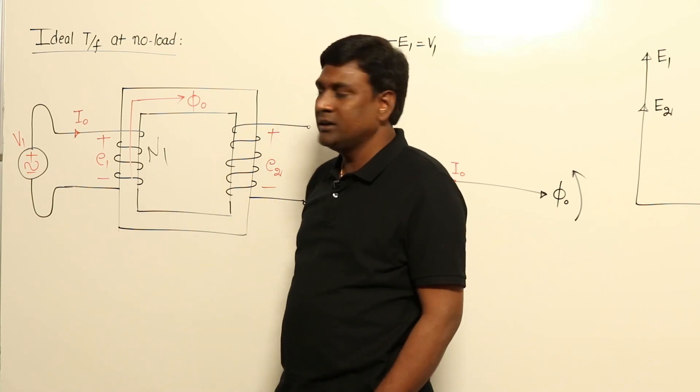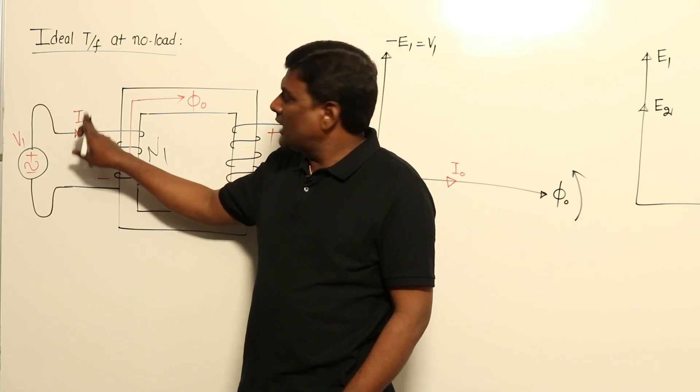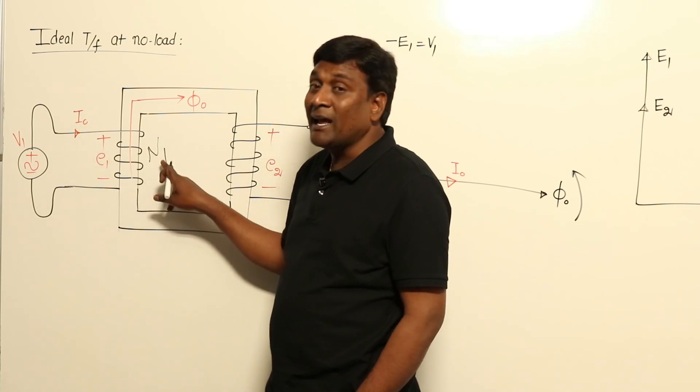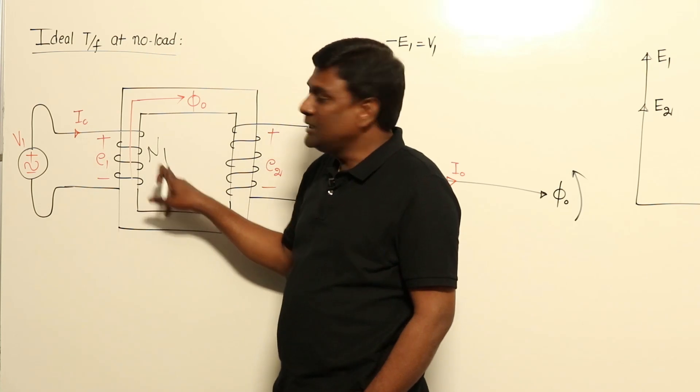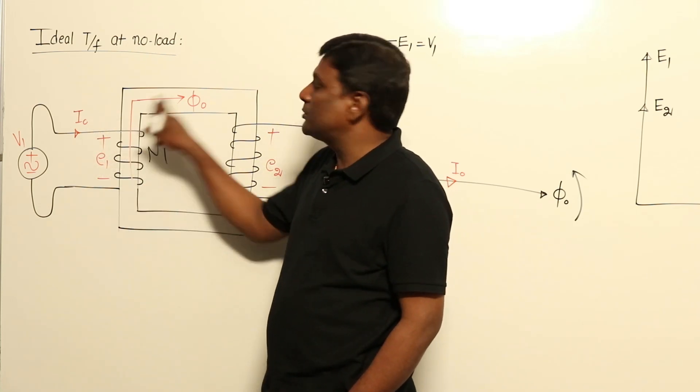Now what will happen? Depending upon the number of turns here N1, I0 will flow. And this I0 and N1 MMF - current multiplied by number of turns, MMF ampere turns - depending upon this MMF, flux will be produced.